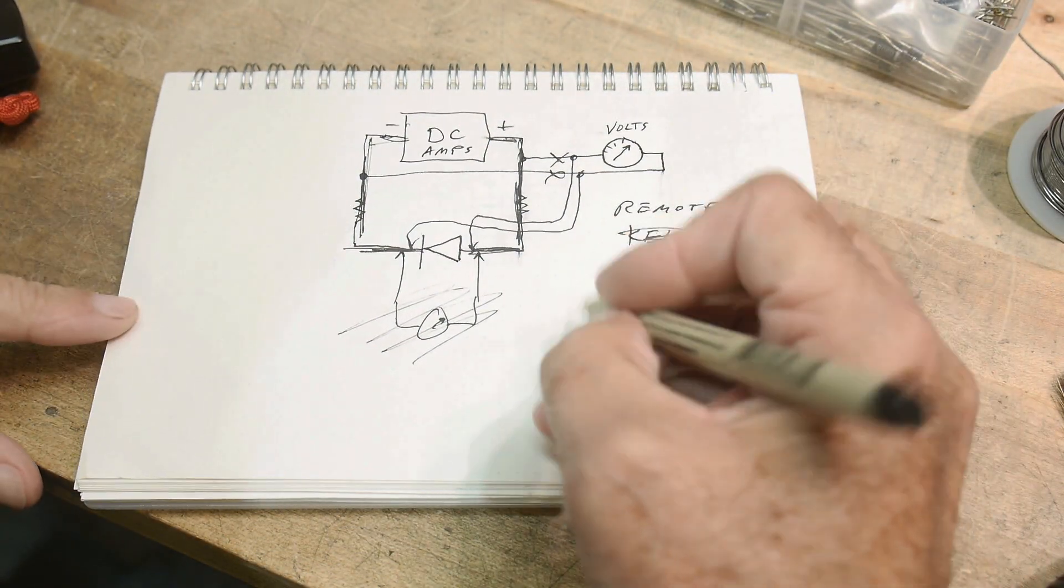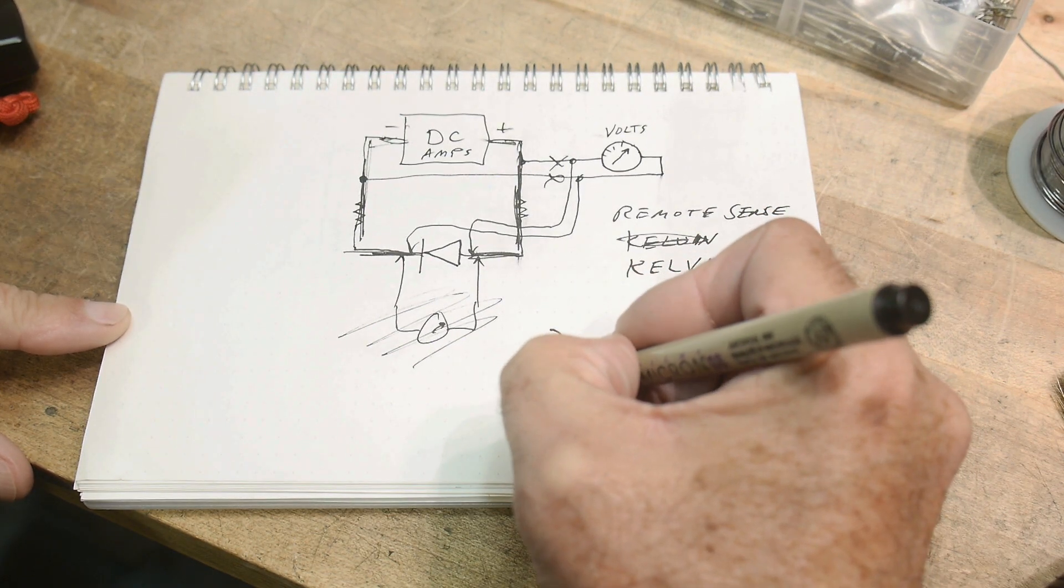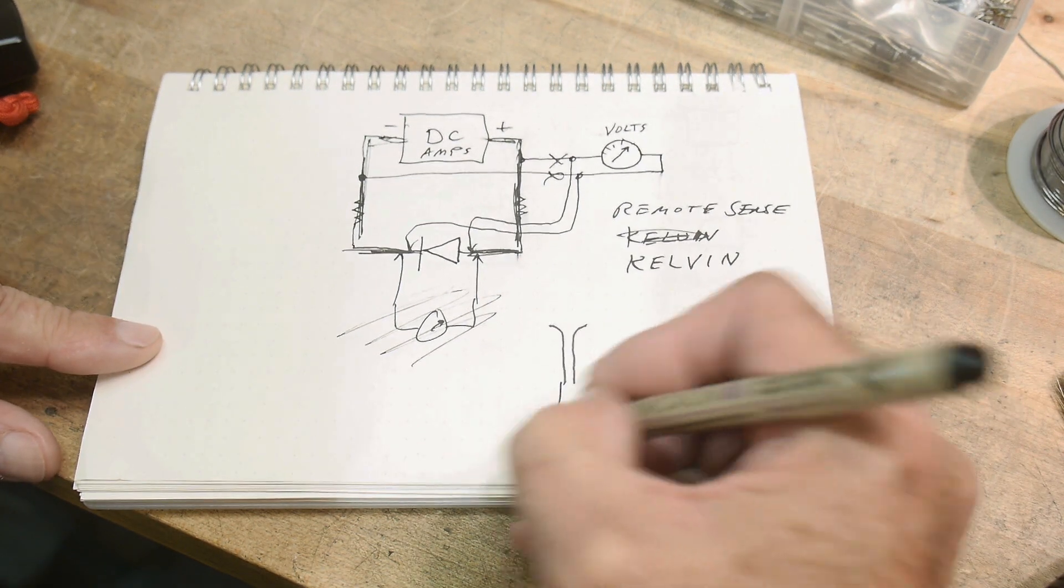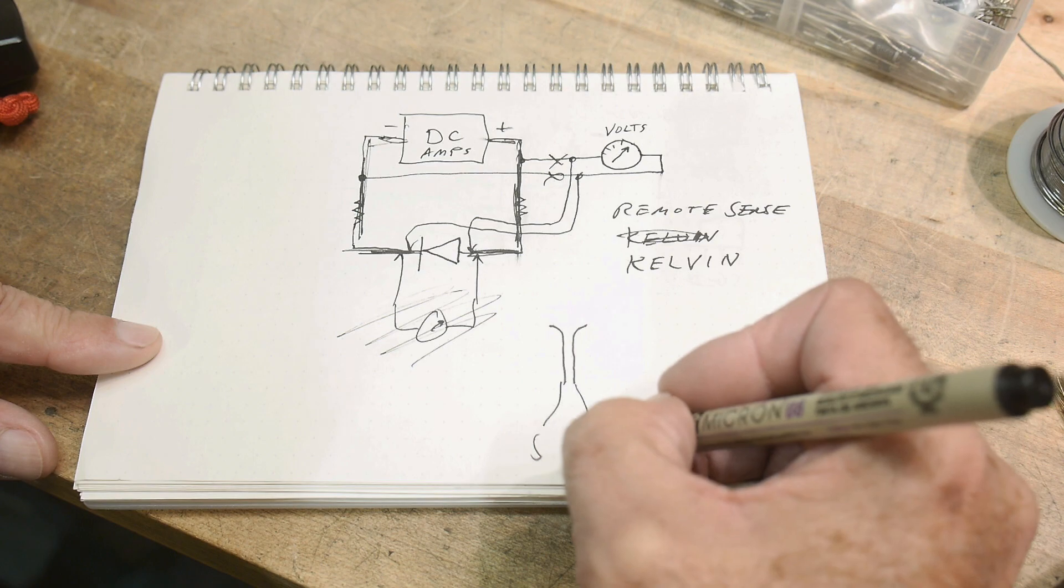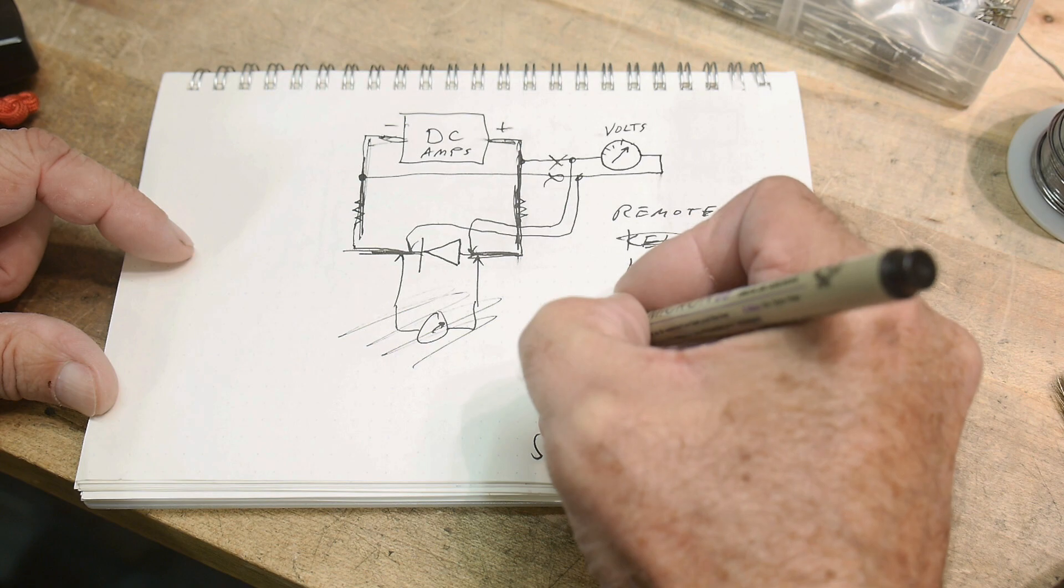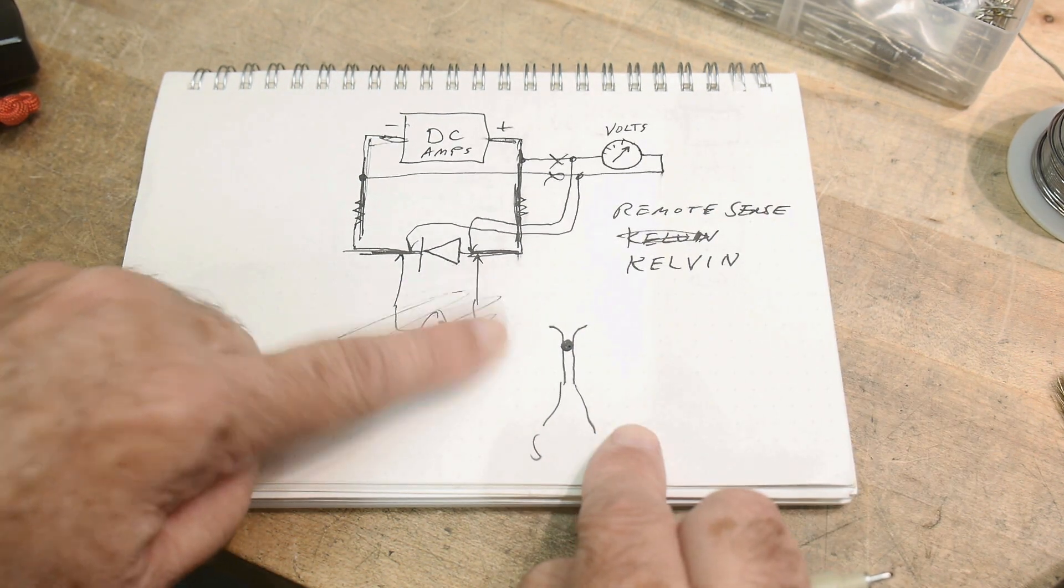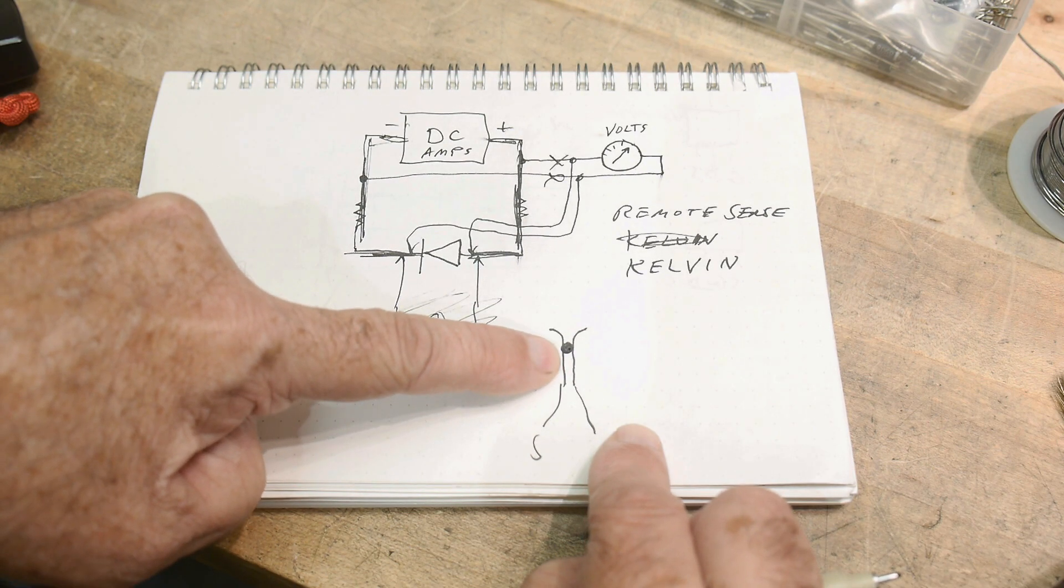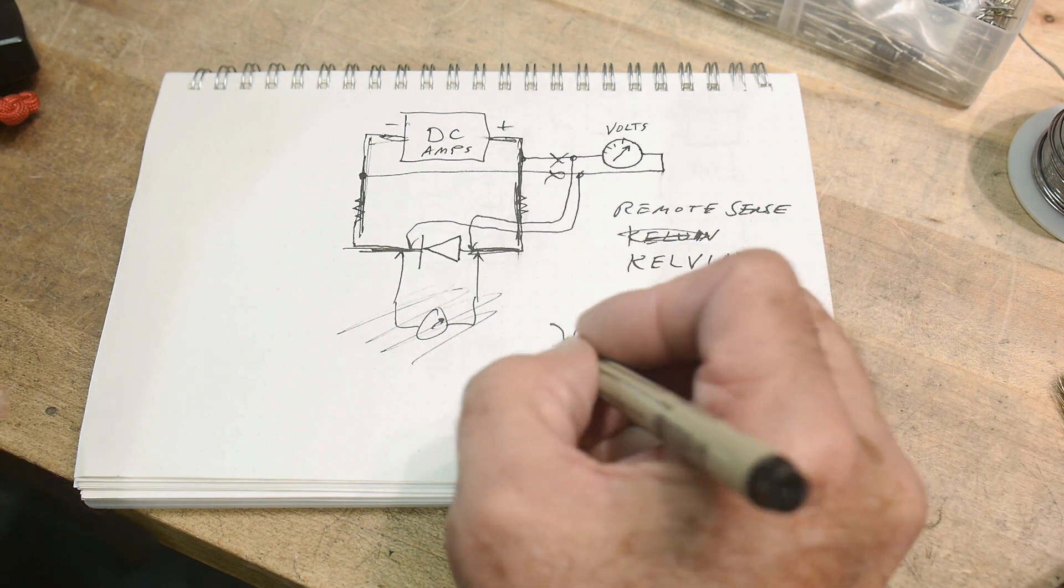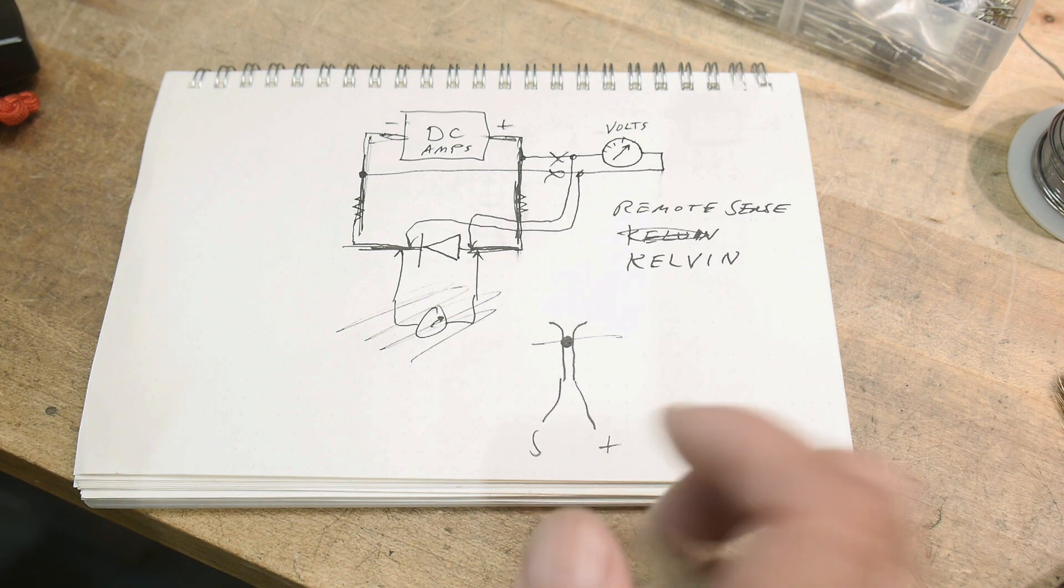And in case you didn't understand my description, that test fixture has one contact that looks like this and one contact that looks like this. And this one goes over to source and this one goes over to sense. And when you push your wire in there, it spans that gap. And so the source is being applied to the left-hand side and the sense is applied to the right-hand side. So your measurement is happening right here. And so it fixes all of those problems.